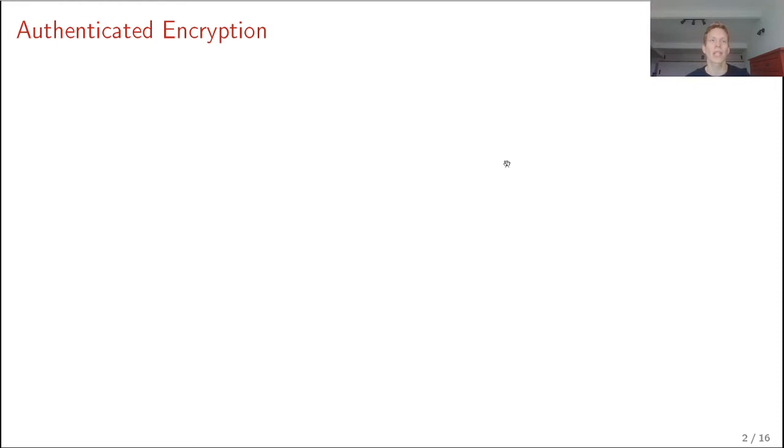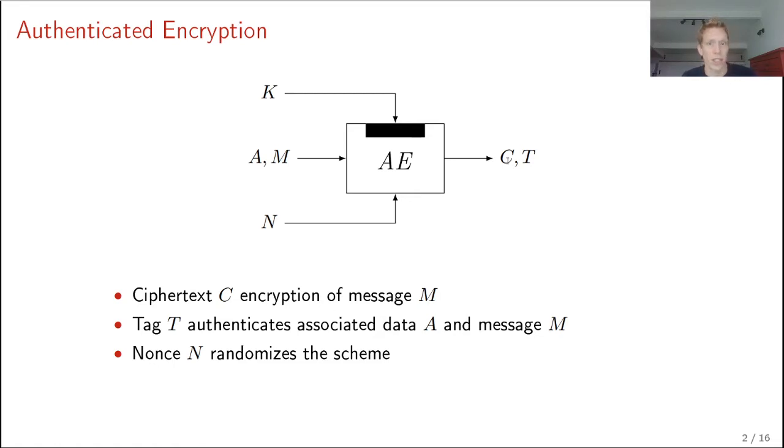The first question this raises is what is authenticated encryption? In a nutshell, it's a cryptographic scheme that provides both encryption of data, meaning that no outsider can learn anything about the data, as well as authentication of data, meaning that no outsider can actually manipulate encrypted data. Mathematically seen, authenticated encryption is just a deterministic function. It gets as input a key, associated data and message, and a nonce. The message is encrypted to obtain a ciphertext. The associated data and the message are authenticated with a tag T. The nonce is there to randomize the scheme in such a way that if you authenticate and encrypt the same associated data and message twice, you still get independent looking ciphertext and tag.